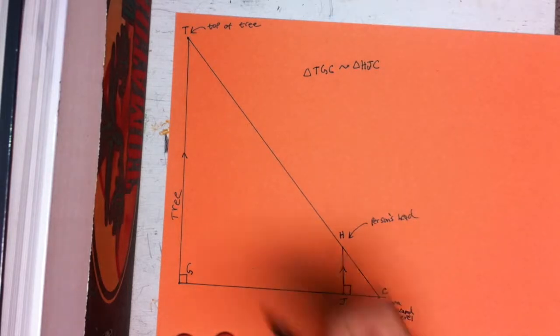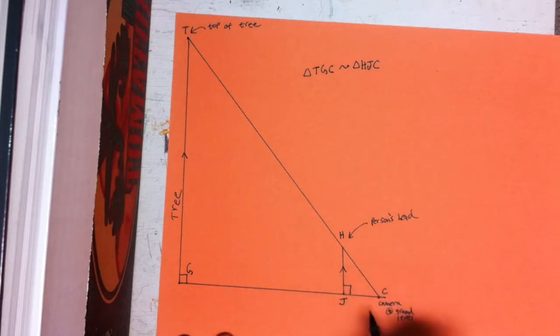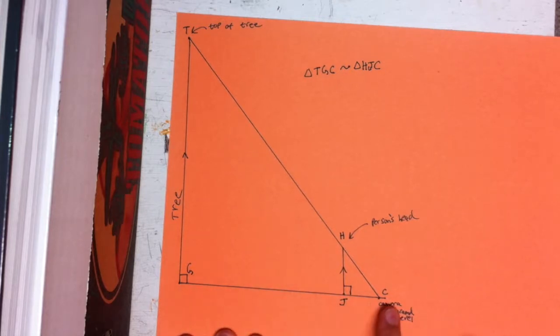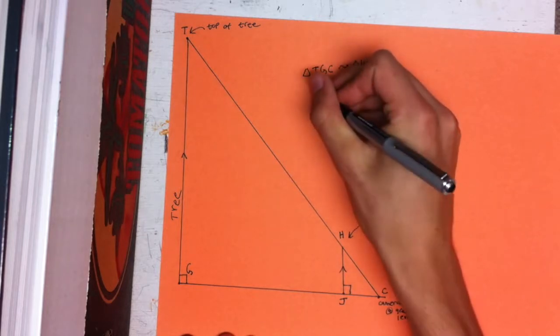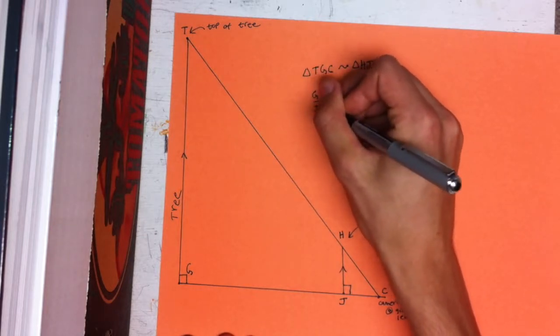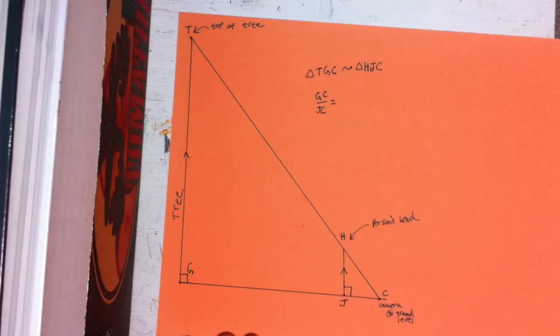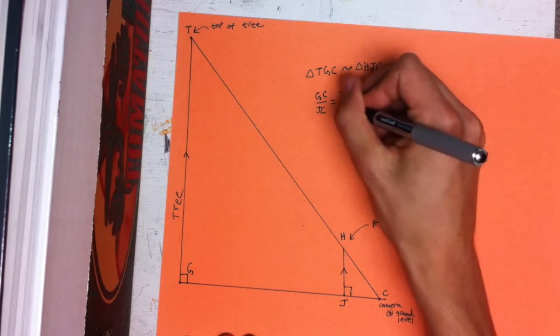We want to find the height of the tree which is the length of line TG. So we want to create an expression that solves for that and we will know this length, this length and this length. Since we already know this length and that length, what we want to do is start with these corresponding sides. So it'll be the ratio of GC to JC. That's going to be equal to some other ratio and we're going to do the ratio of these two corresponding sides of the triangle which is TG to HJ.